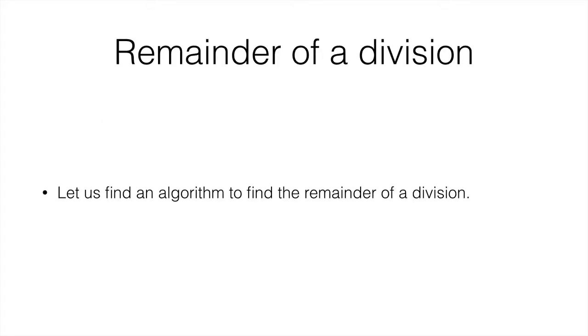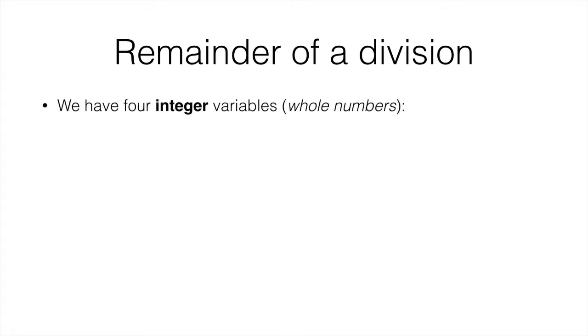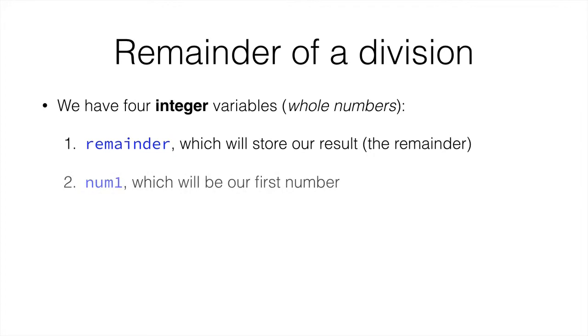Let's calculate an algorithm to find the remainder of a division. In a remainder of a division, we will need four integer variables, whole numbers. One of them is going to be the remainder, that will store the result of the remainder of the division. Num1, which will be our first number.